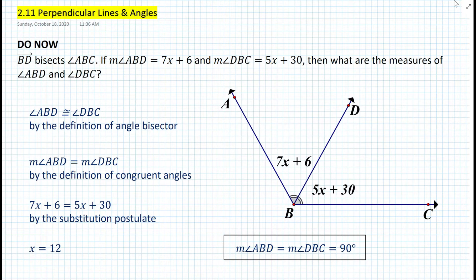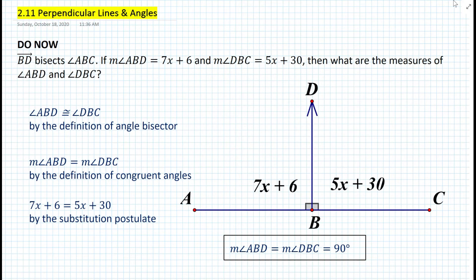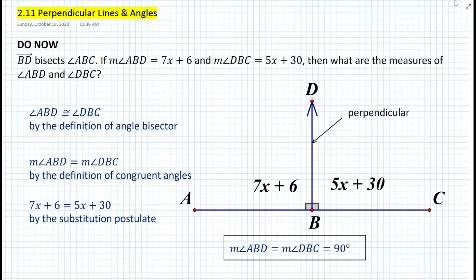So this means the diagram is not drawn to scale — and we can never assume any diagram is drawn to scale in geometry. We should redraw the diagram to represent the real scenario, in which angle ABD and angle DBC each measure 90 degrees. In reality, the diagram looks like this. Now we can see that Ray BD is a perpendicular line; it's still an angle bisector, but it's also perpendicular to line AC.